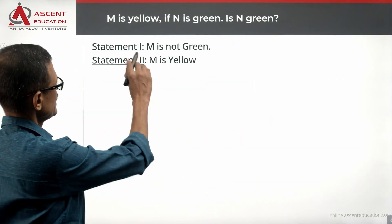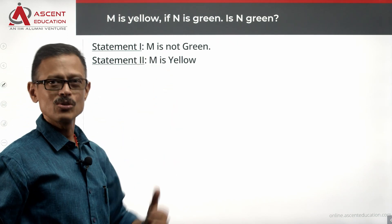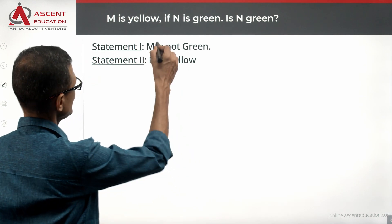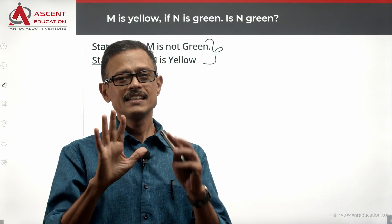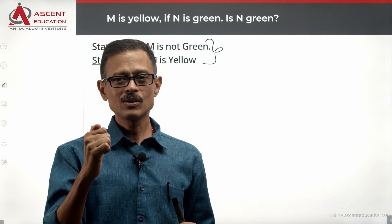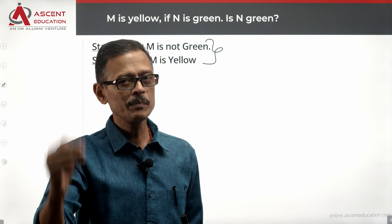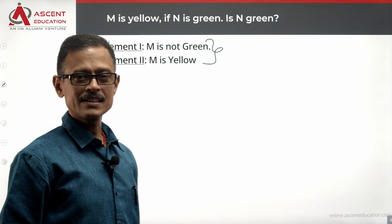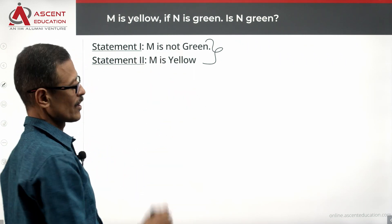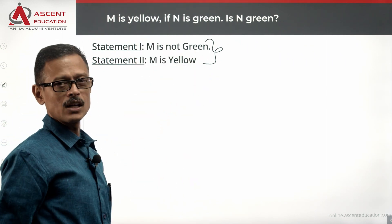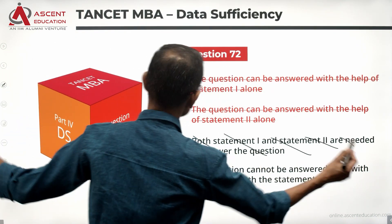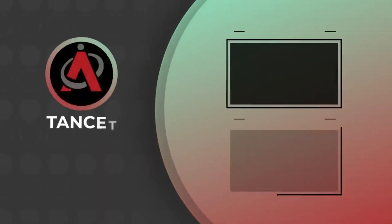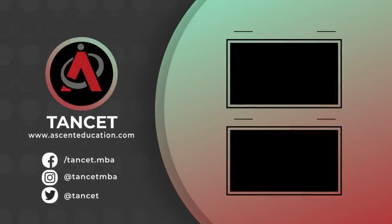Combining both statements: M is not green, and M is yellow. From the question stem, if N is green, then M is yellow — but M could be yellow even when N is not green. Together, the statements do not allow us to definitively answer whether N is green or not. Therefore, we eliminate answer option C. Choice D is the correct answer to this question.